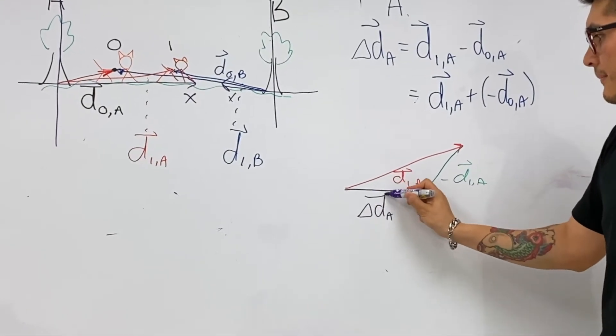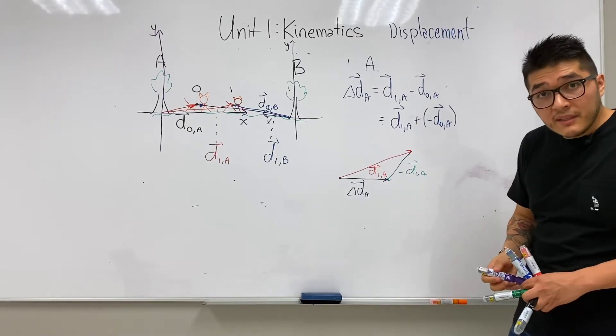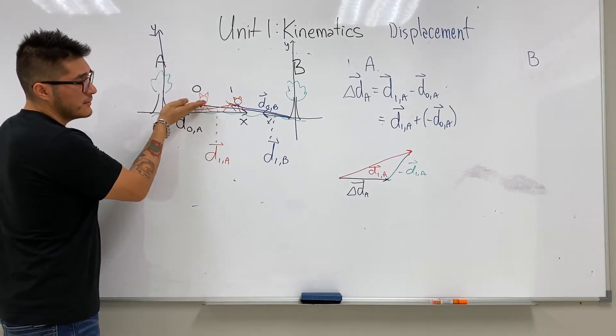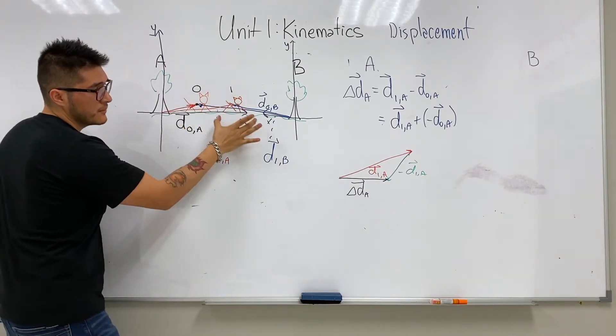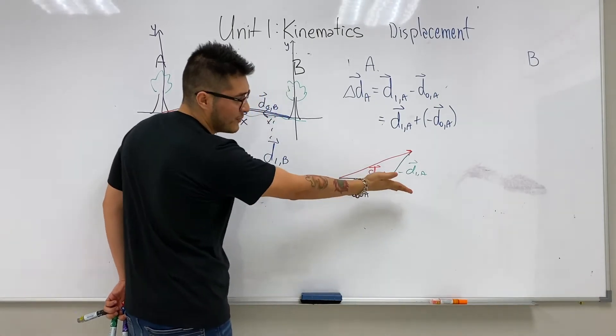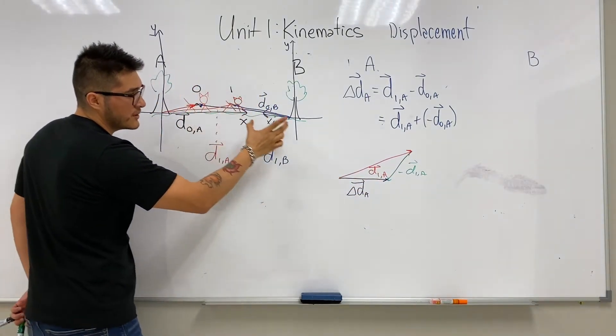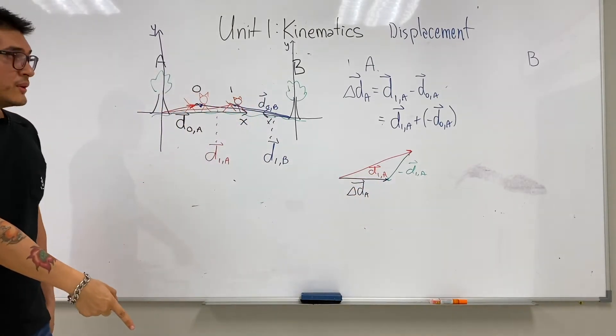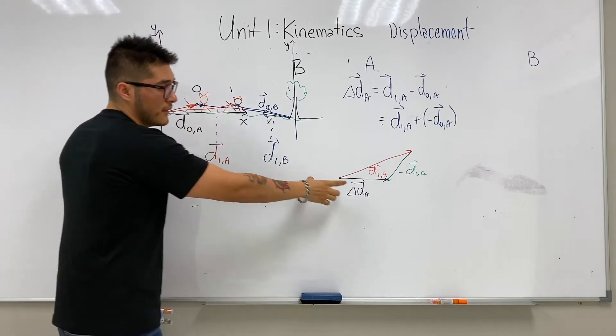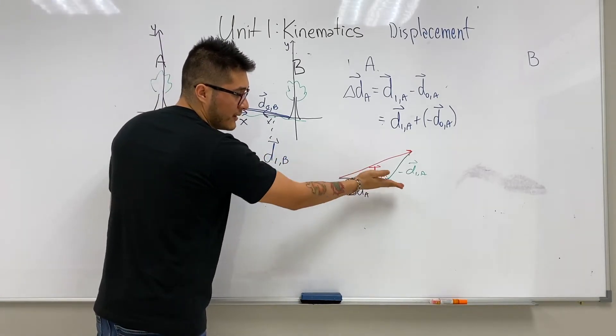D1A, which makes sense, right? Because look, that displacement of the cheetah is to the right by how much? That length. Oh, I was a bit off, but you get the idea. It was to the right with this much distance apart. So that means that our tree A measures the displacement from 0 to 1 of this much quantity to the right.